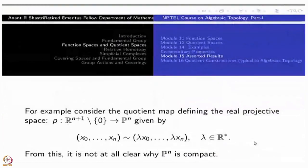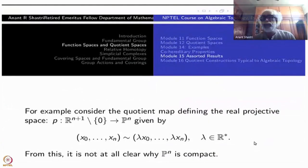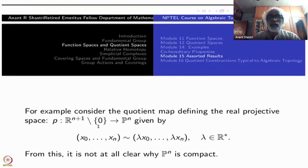Namely, if you take the projective space which is defined as a quotient of R^(n+1) minus 0, you can restrict it to just the unit sphere there. The original map P from R^(n+1) to P^n is actually both open as well as closed map. And the sphere is a closed subset. So this entire thing will be a closed subset.